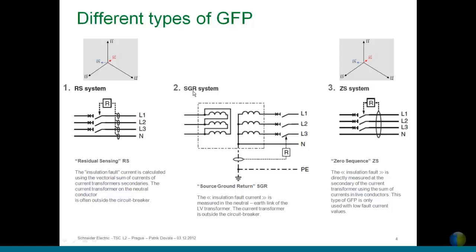The second type is SGR — Source Ground Return protection. Here we are measuring directly the earth link of the transformer, so all fault current and residual current coming back to the neutral of the transformer is captured and measured, providing protection against this fault current.